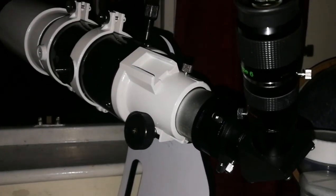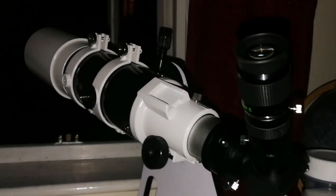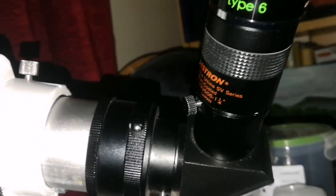Something like an apochromat by using a Barlow. How? What's the trick here? This practically increases the focal length of the telescope. When the focal length of the telescope is increased in refractors...